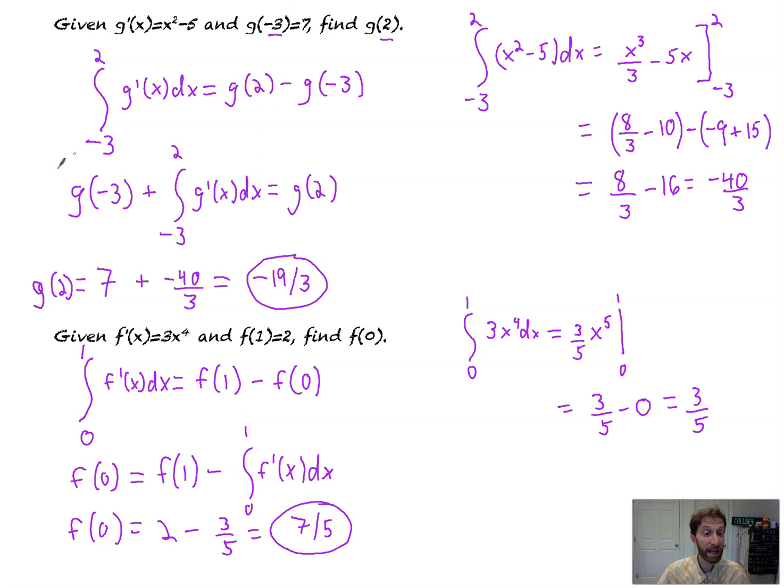g of 2 in this problem is like the end because g of negative 3 comes before it. So if I add the beginning value plus how much I change, that's what the area is, how much I change the displacement, then I'll get the ending value. This one makes sense in much the same way. f of 1 is where we end up, right? So if where I end up minus how much I've changed, well, that'll get me back to where I started.